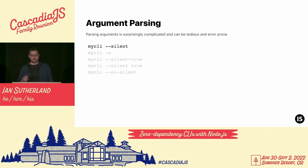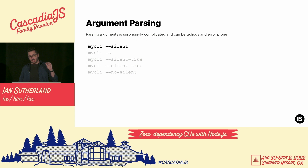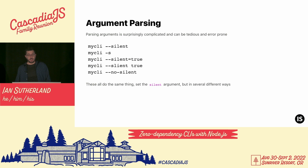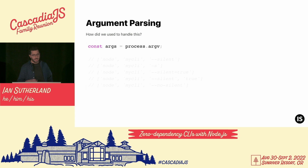Let's say we have a CLI — creatively called my CLI — and it takes a silent option. This is a common argument that a lot of CLIs take; it just means suppress any output. Let's look at the ways we could pass this option. We could do double dash silent, or the short version dash s. You could also do the longer form with an equal sign and a value — silent equals true — or the same thing without the equal sign. Sometimes you can pass an inverted version by putting 'no' at the beginning of the name. These all do the same thing — they set the silent argument in many different ways.